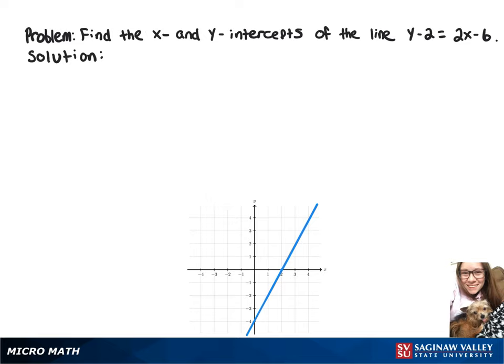We're going to find the intercepts of the line y minus 2 equals 2x minus 6. So we'll start with the x-intercept, and when we sub 0 in for y, we get negative 2 equals 2x minus 6.